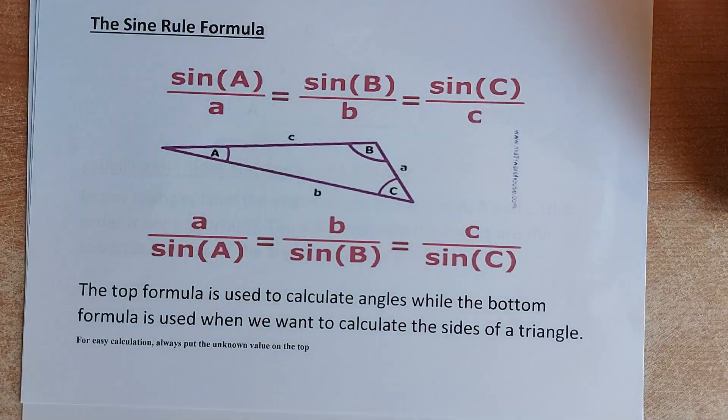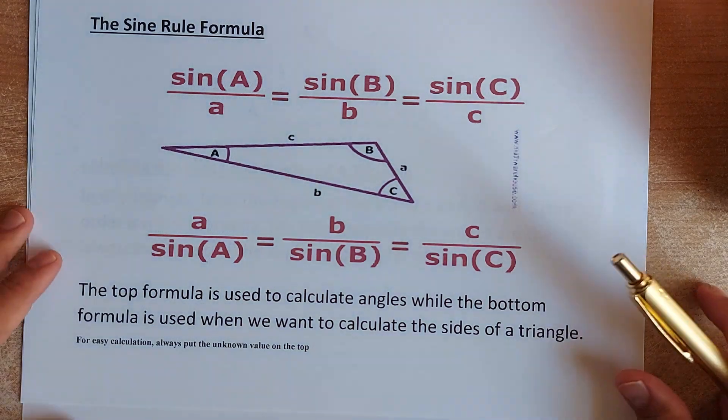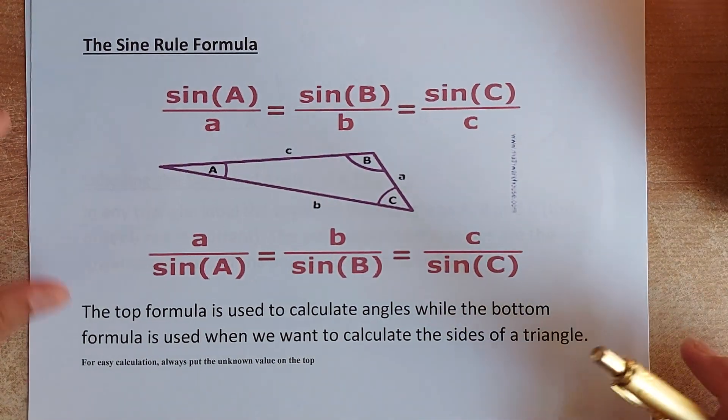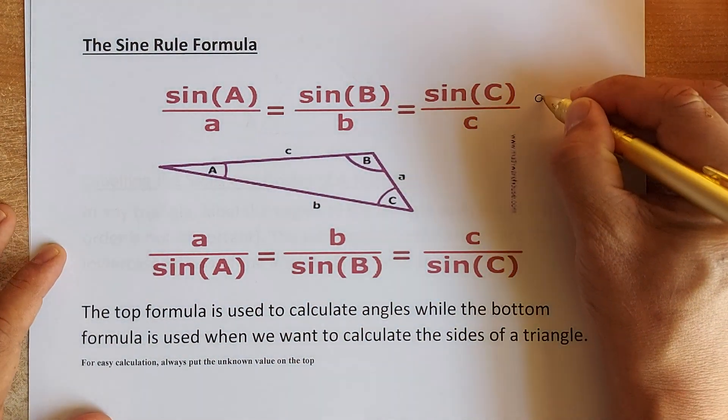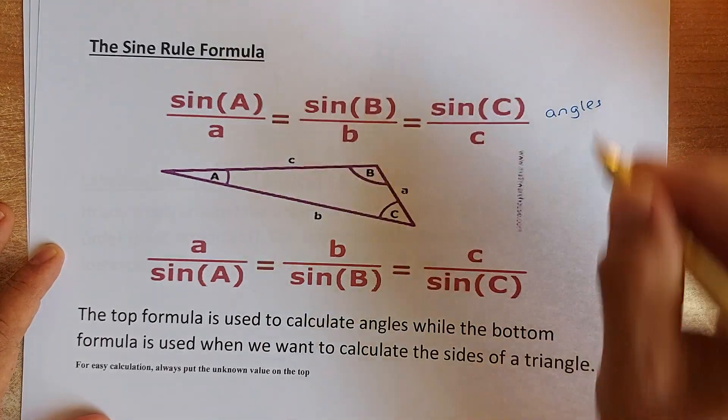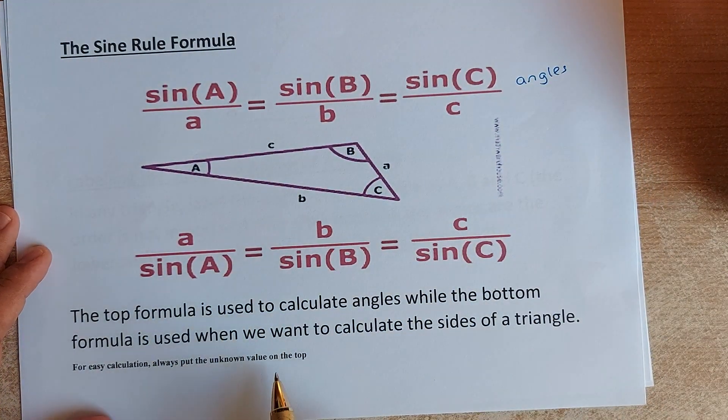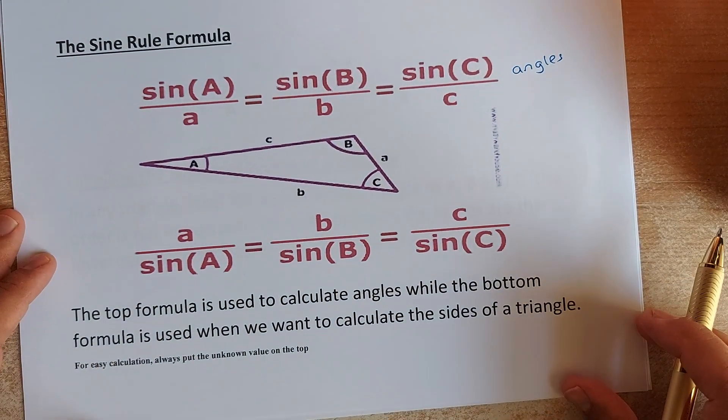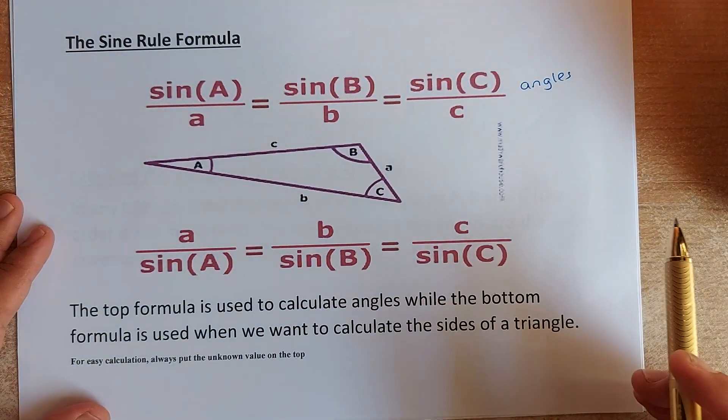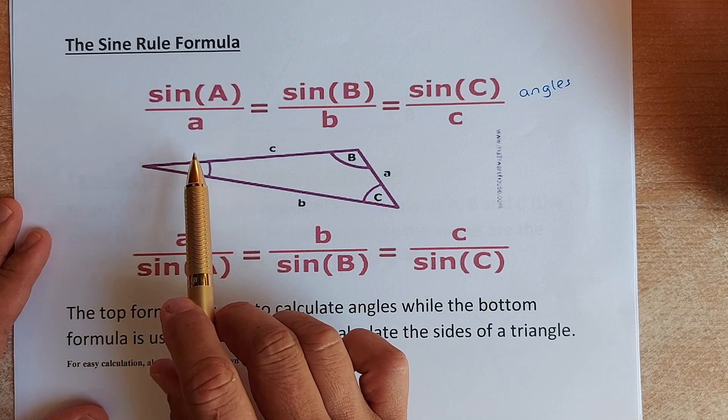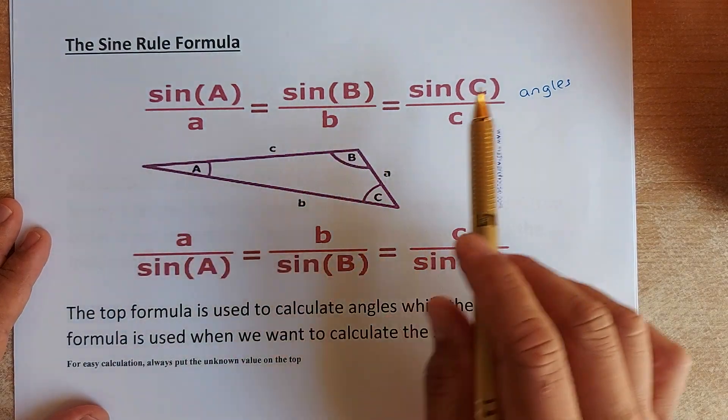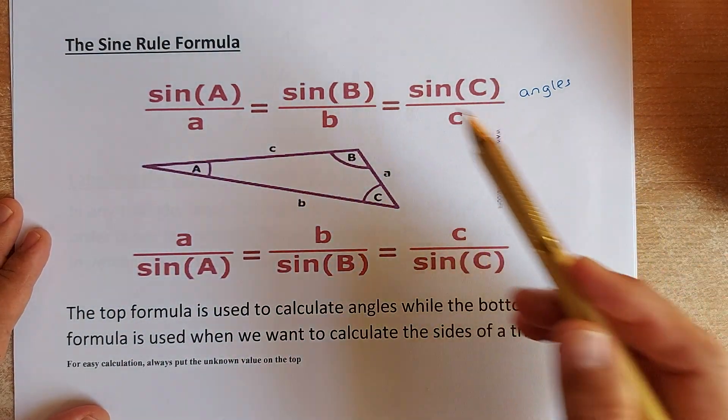Before we learn, we need to know the formula. The sine rule has this formula. If you want to calculate angles, you use the top formula. While the bottom one is the formula to calculate the size. It is the same thing, just the reverse. To find the angles, you put sin(A)/a, sin(B)/b and sin(C)/c. That is why it is called the sine rule.